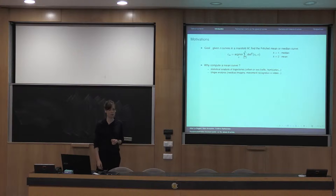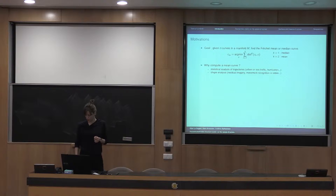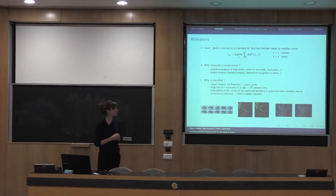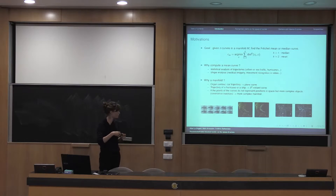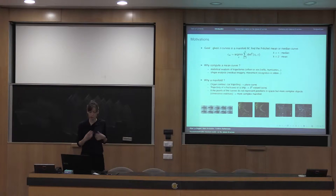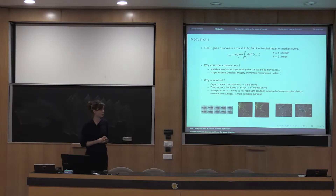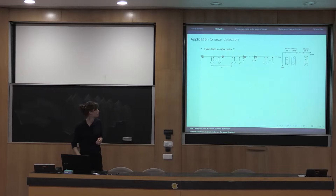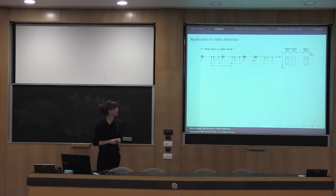There are lots of applications in statistical analysis of trajectories and in shape analysis for closed curves. We're looking at curves in a general manifold because applications don't necessarily provide planar curves — for large trajectories on the Earth, you might look at curves on the sphere. The points can represent any object; for us, they will be covariance matrices, and our application will be specifically in radar detection.